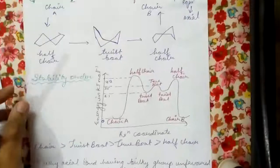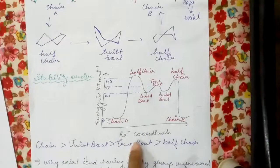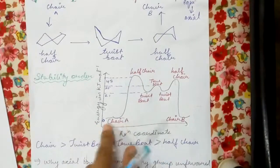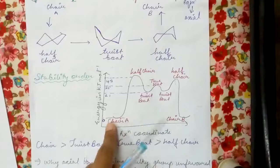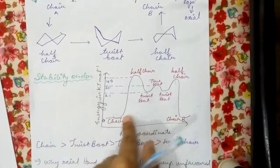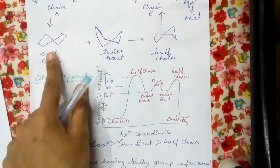Now let us look into the stability of the structures. If we plot a graph between reaction coordinate and energy in kilojoules per mole, we see that chair form is of the least energy. Here, say it is of zero kilojoules per mole. Then we will see it transform to half chair as we have seen above, so it transforms to half chair.